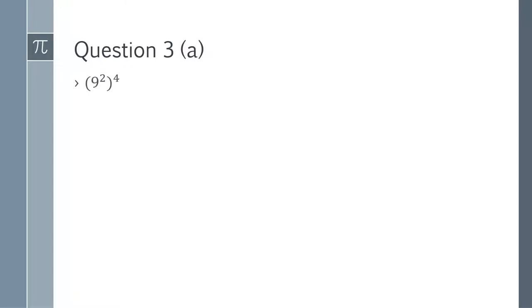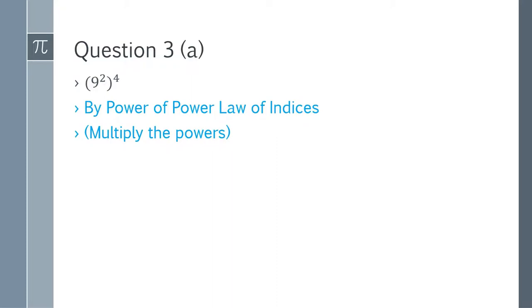Question 3a: (9^2)^4. This is solved using the power of power law of indices — we multiply the powers. So it becomes 9^(2×4) = 9^8. That is the answer.